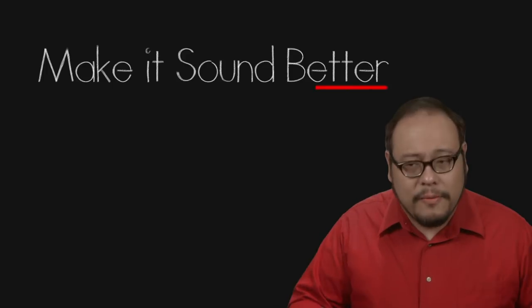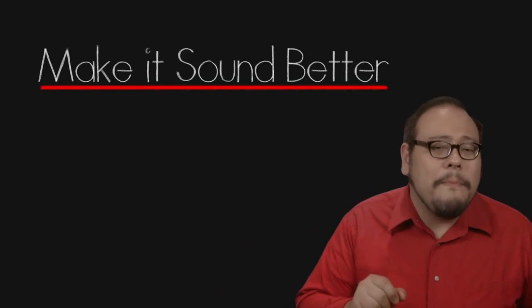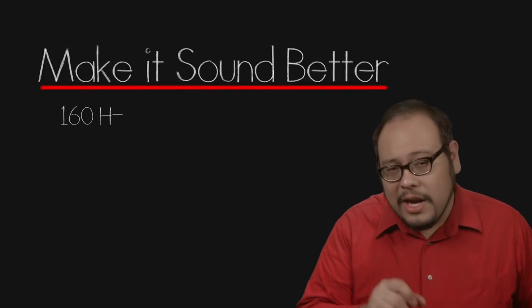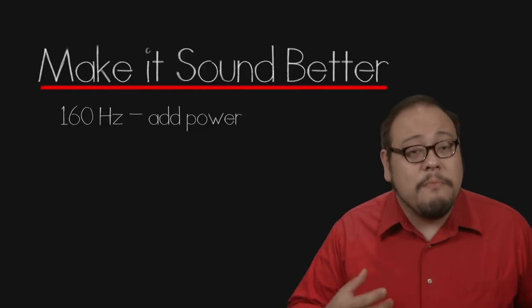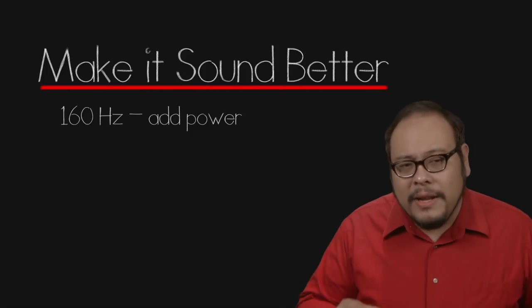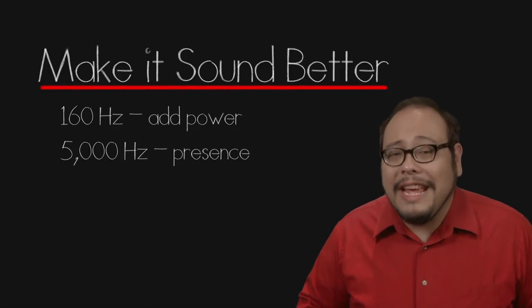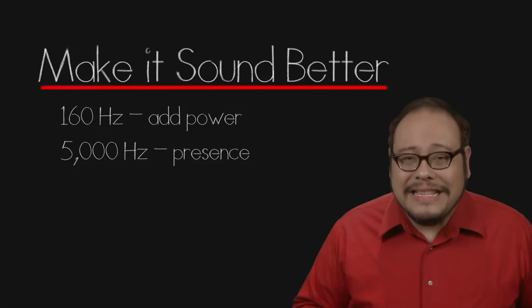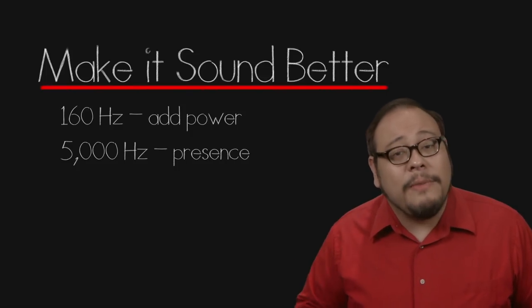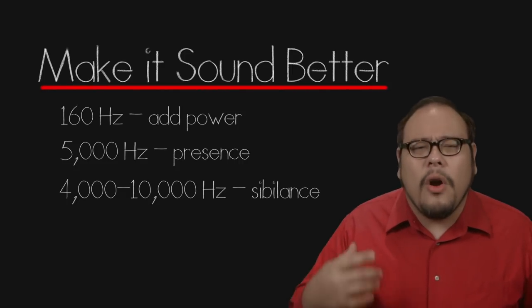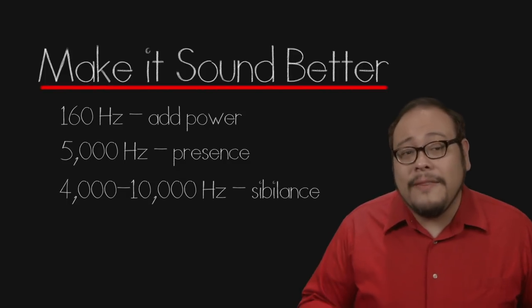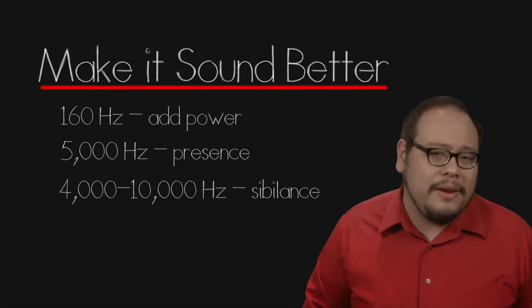The final reason and arguably the most important use of EQ is for creative reasons to make the track sound better or different. For instance, boosting the bass frequencies on a dialogue track say around 160hz will add power to the human voice but too much and you can make the track sound muddy and unintelligible. You can add a bit of presence by boosting the 5kHz range but again too much will cause ear fatigue. The sibilance or S sounds can be found between 4 and 10kHz. You can boost this for a bit more clear sound or cut it to get rid of the harsh s sounds. Playing with these different EQ settings will get you closer to your desired sound.